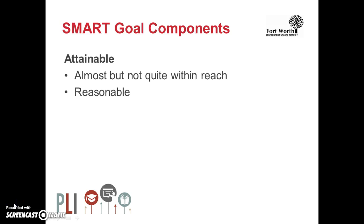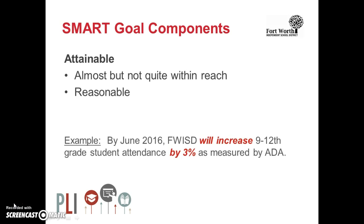Next is the A, which stands for attainable. As we develop our SMART goal, we want to make sure it is attainable, but also makes us stretch a bit, meaning that it is almost but not quite within reach. This goal is going to make us work hard. It must also be reasonable. It has been determined that a 3% increase is attainable and reasonable.